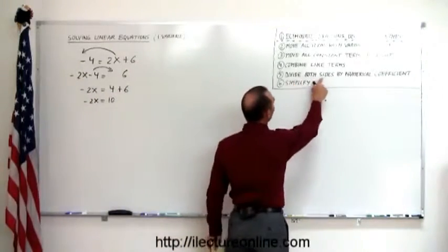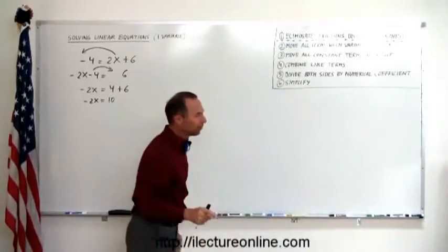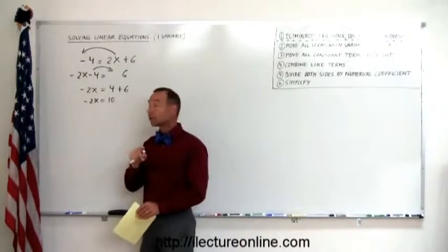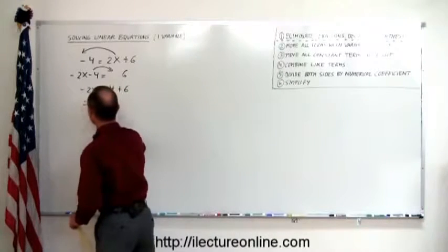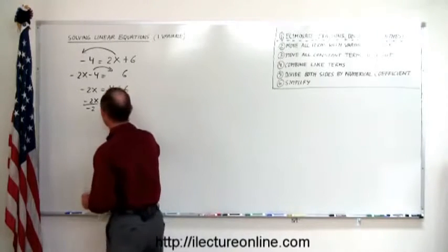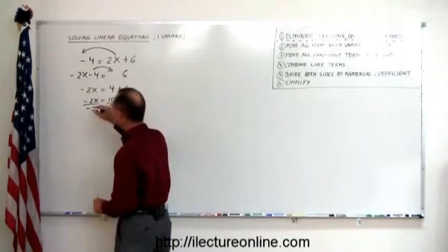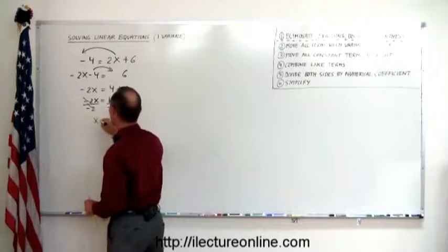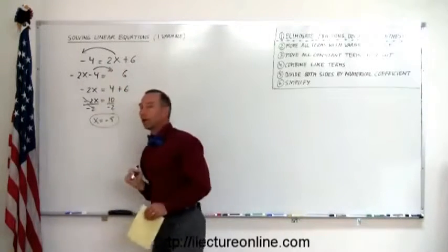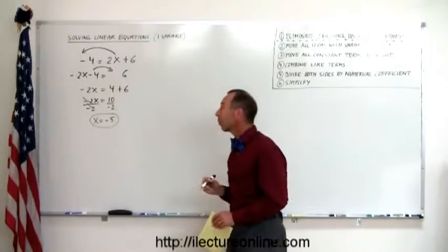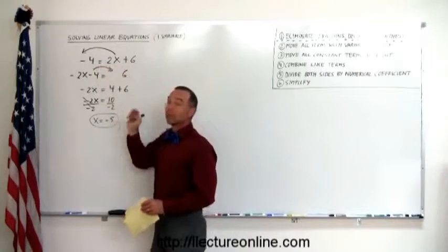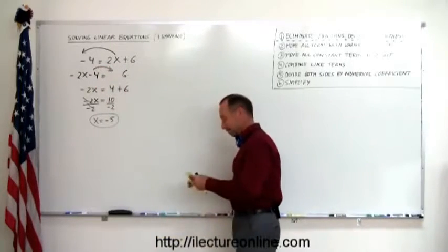The next step says divide both sides by the numerical coefficient in front of the variable. In front of x we have a minus 2 — that is the numerical coefficient of x. So we divide the left side by that number, and whatever we do to one side of the equation we have to do to the other side, so divide that by minus 2. These two cancel, and we have x equals 10 divided by minus 2, which is minus 5. That's the answer — the solution. If I replace x with minus 5, the left side will equal the right side.